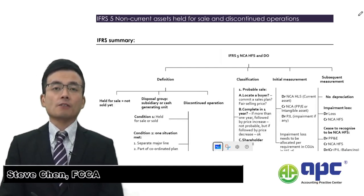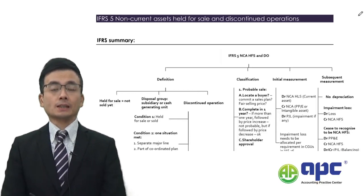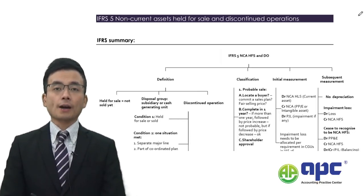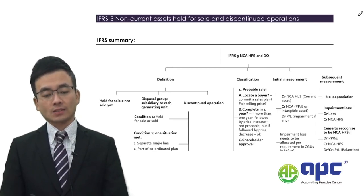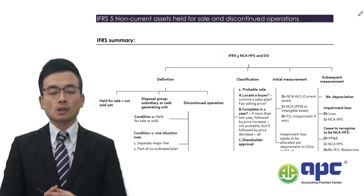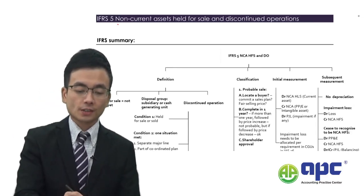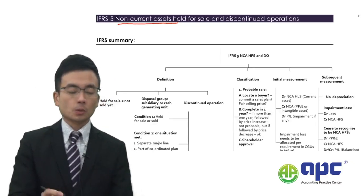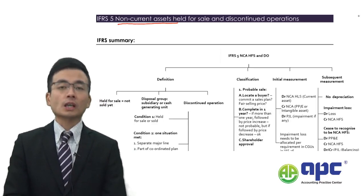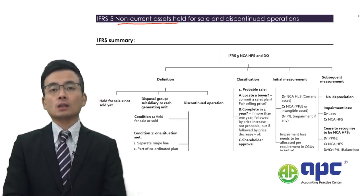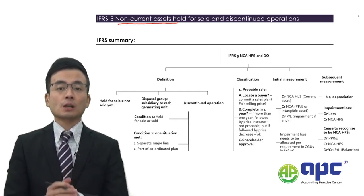One of the very important IFRS that is frequently examined in the paper is IFRS number 5, non-current assets held for sale and discontinued operations. What I mean by non-current asset includes PP&E, intangible assets, and investment property — but instead of using it continuously in the business, the business decides to sell it, meaning holding it for sale purposes.